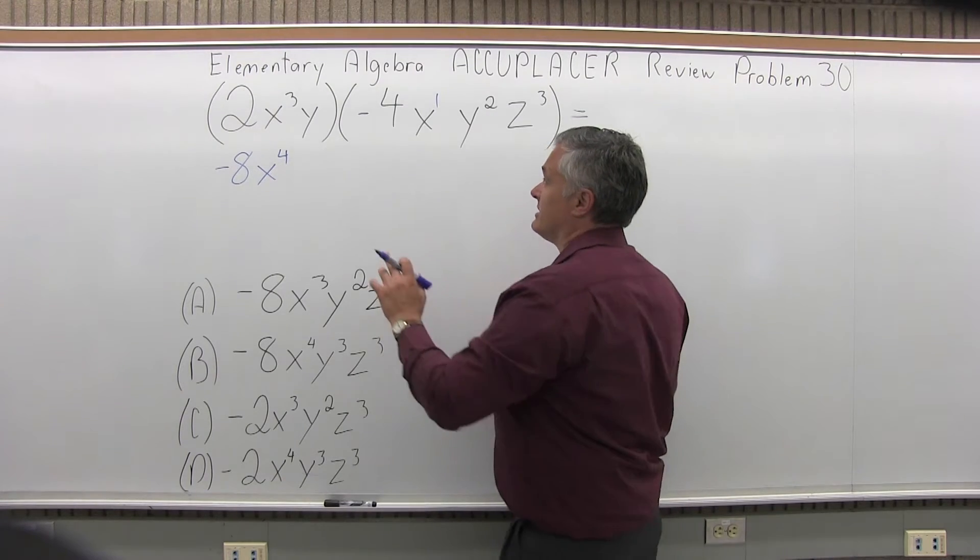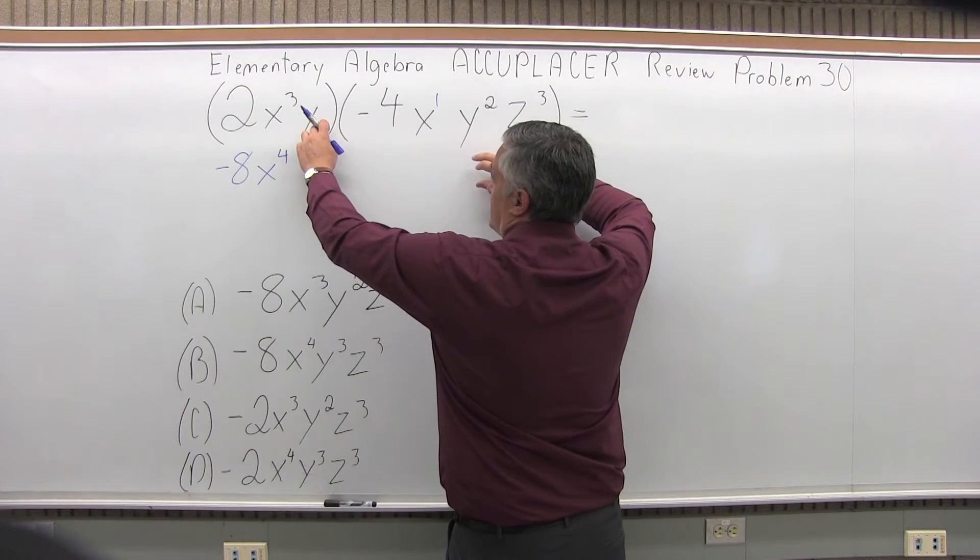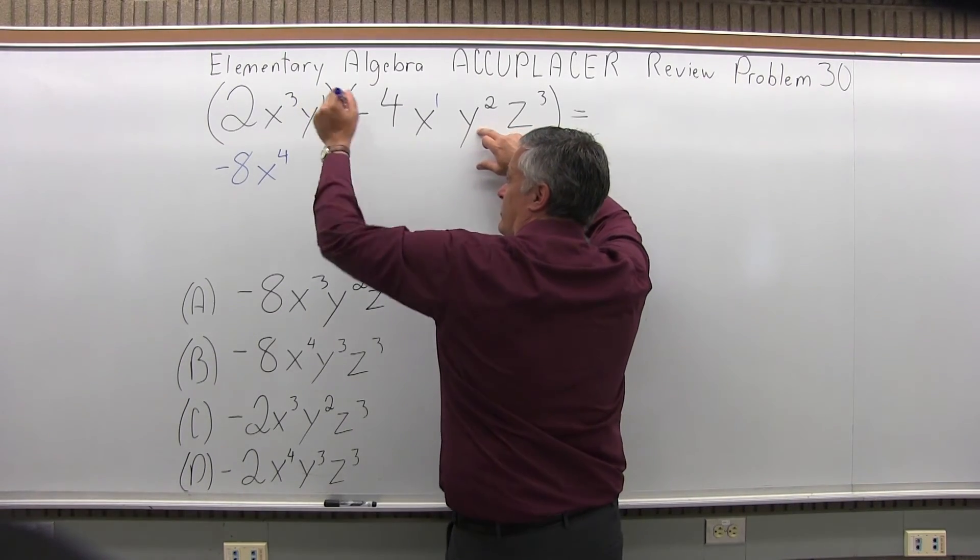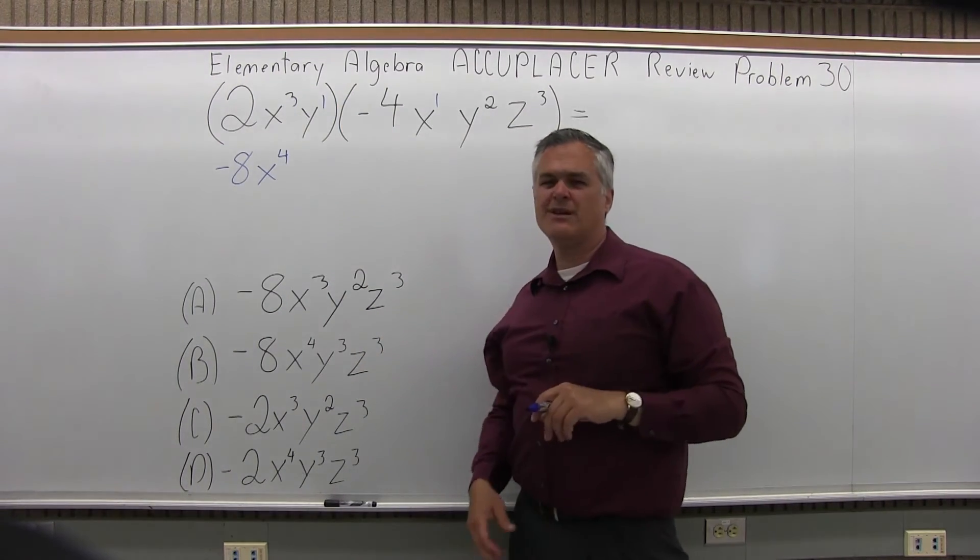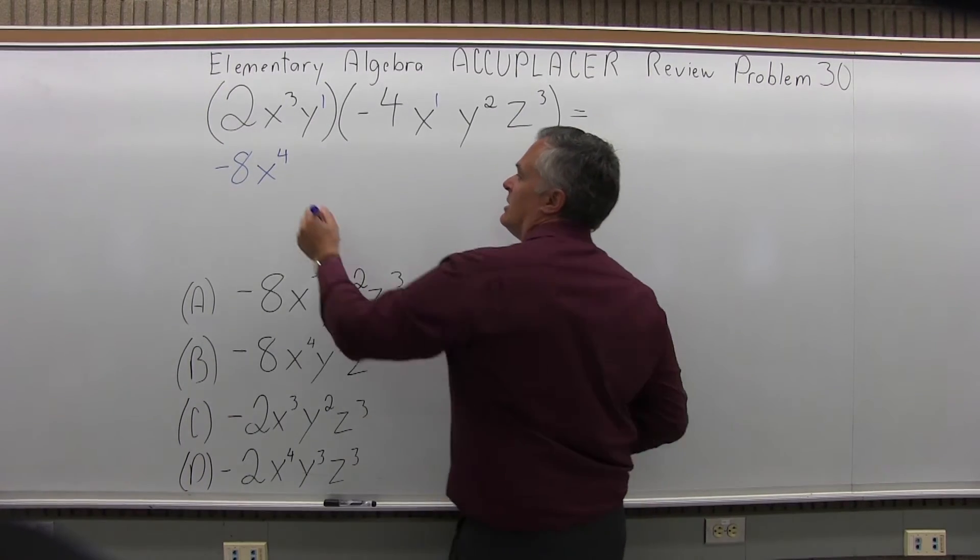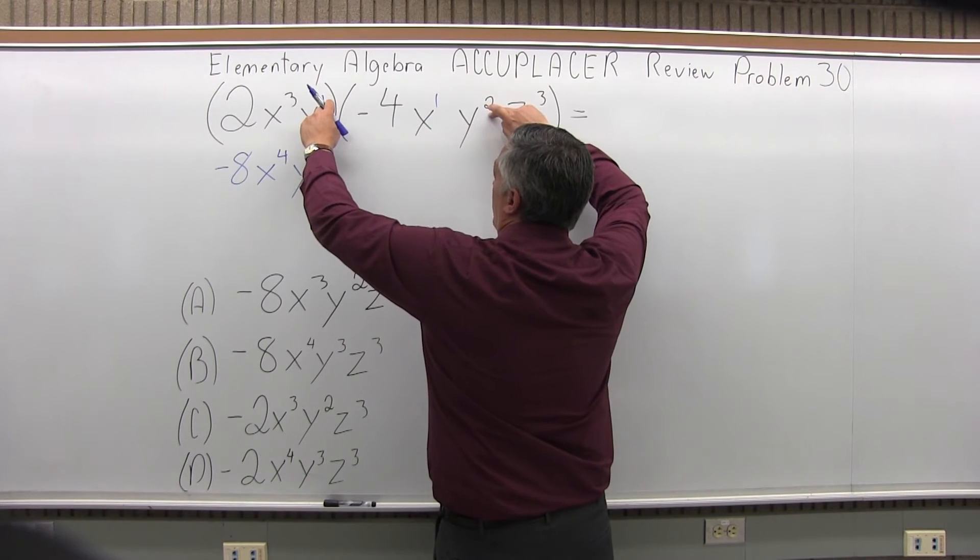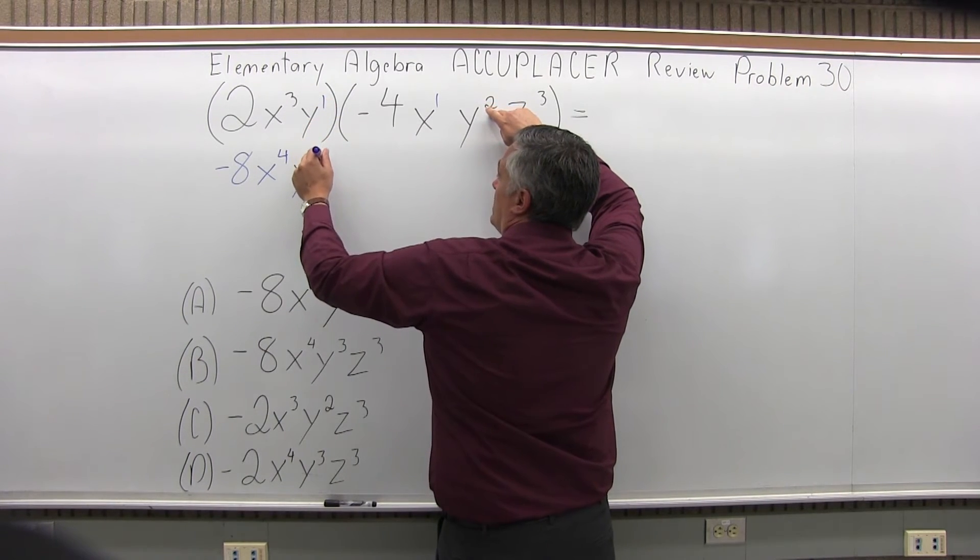Next, focus just on the y's. You have a y in the first set of parentheses and a y² in the second set of parentheses. The y in the first set doesn't have an exponent written; again, assume it's the first power. So when I have a y in my answer, it's going to be an exponent of 1 plus 2, which would be third power.